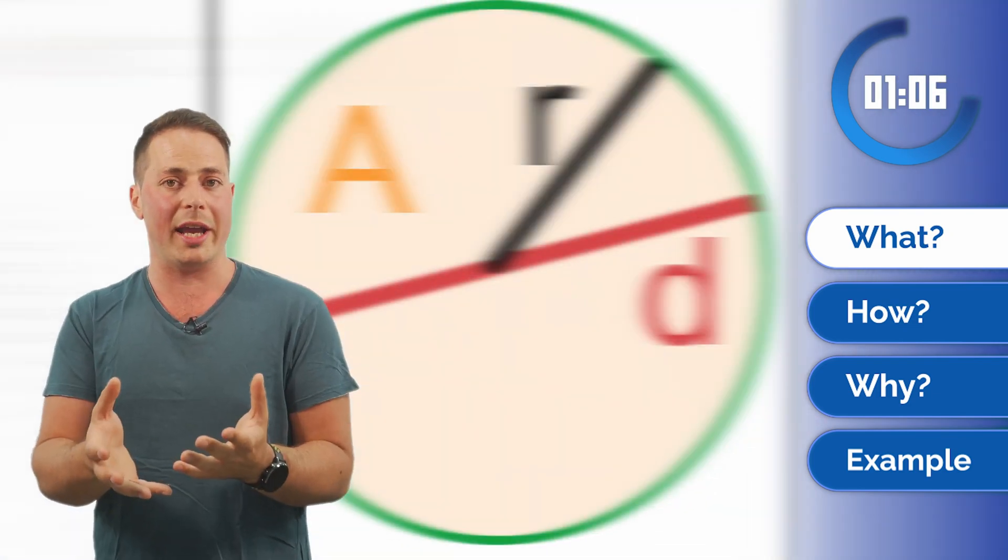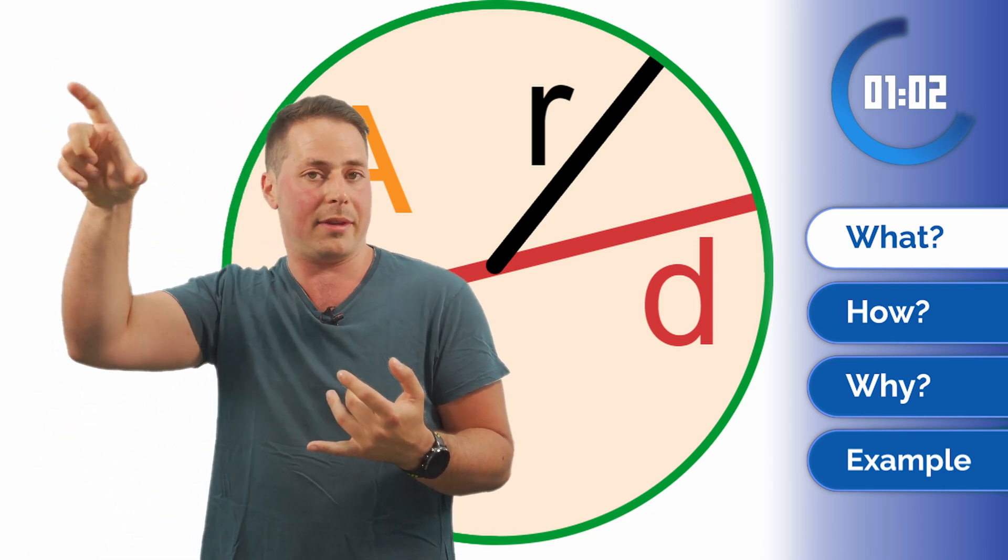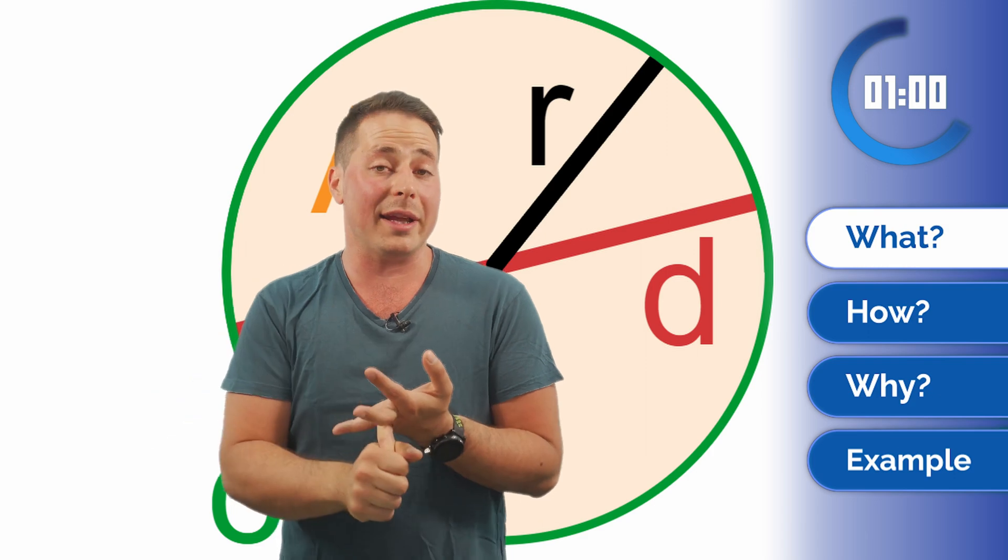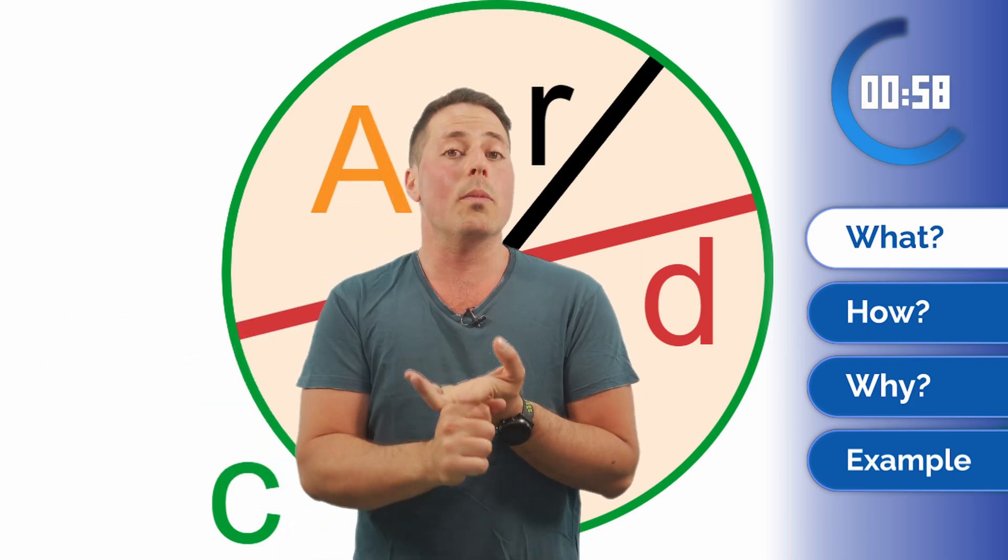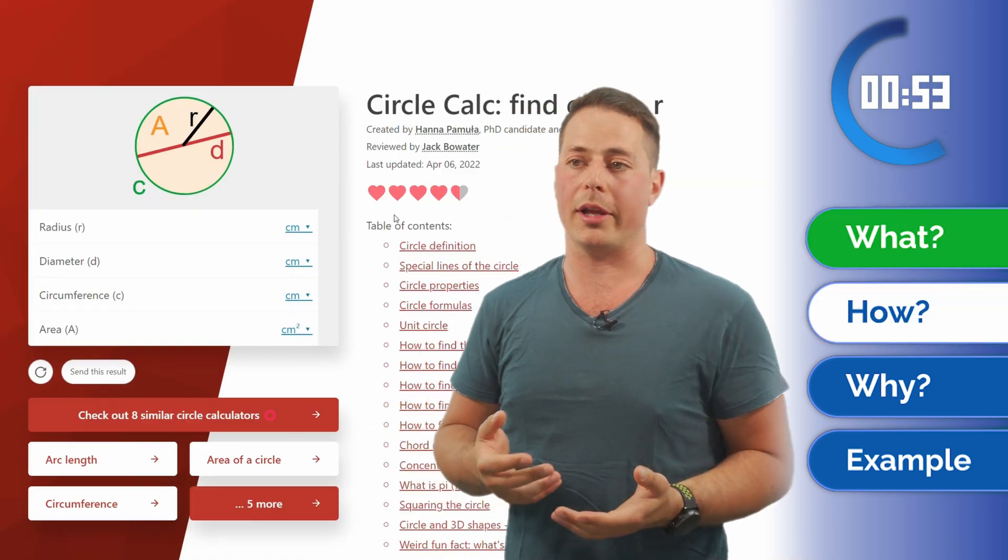And the circle is a very simple shape and it can be defined by its radius, which is the distance between the center and the points in the circumference, by the diameter, which is double that, by the area, or by the circumference length. And we use this fact in our calculator.